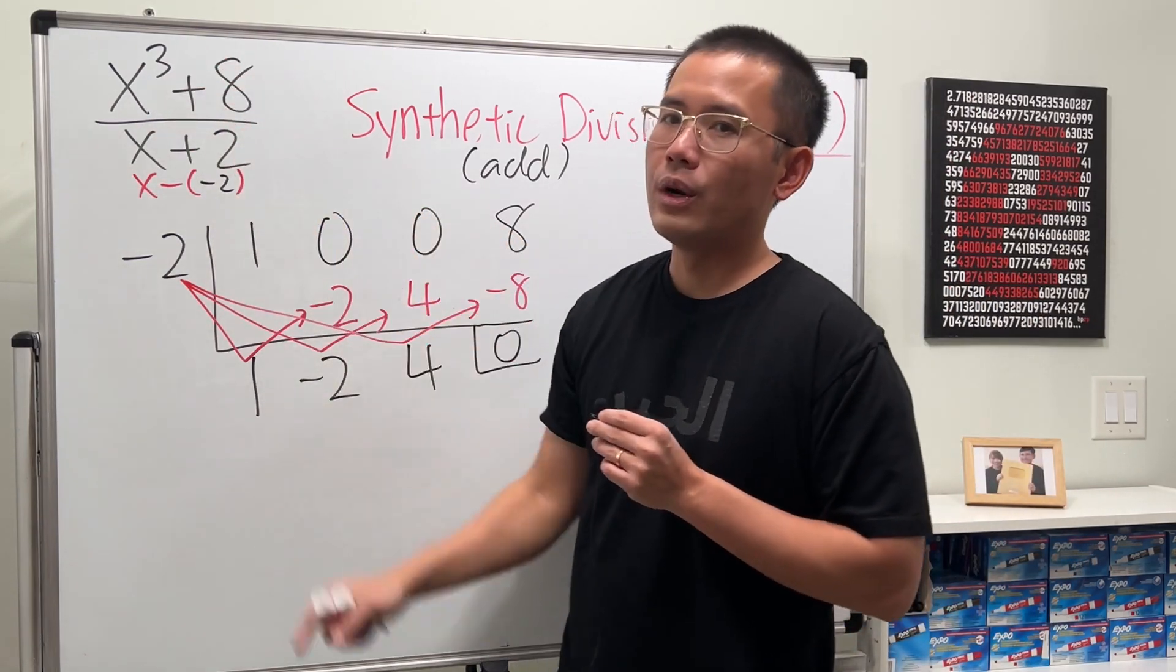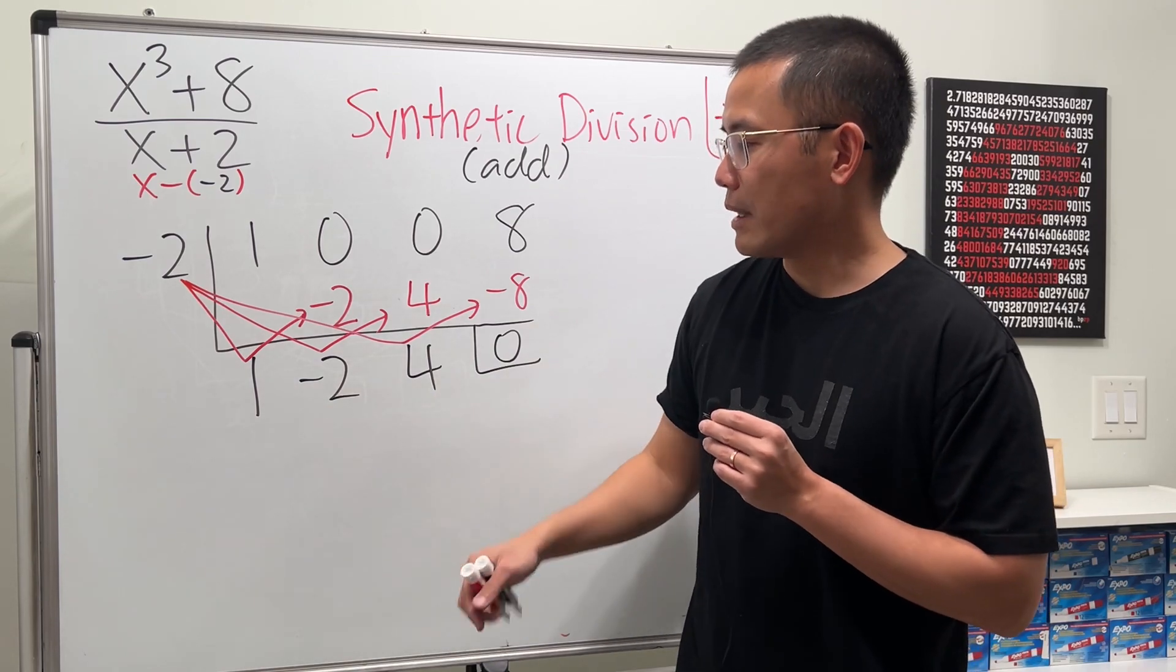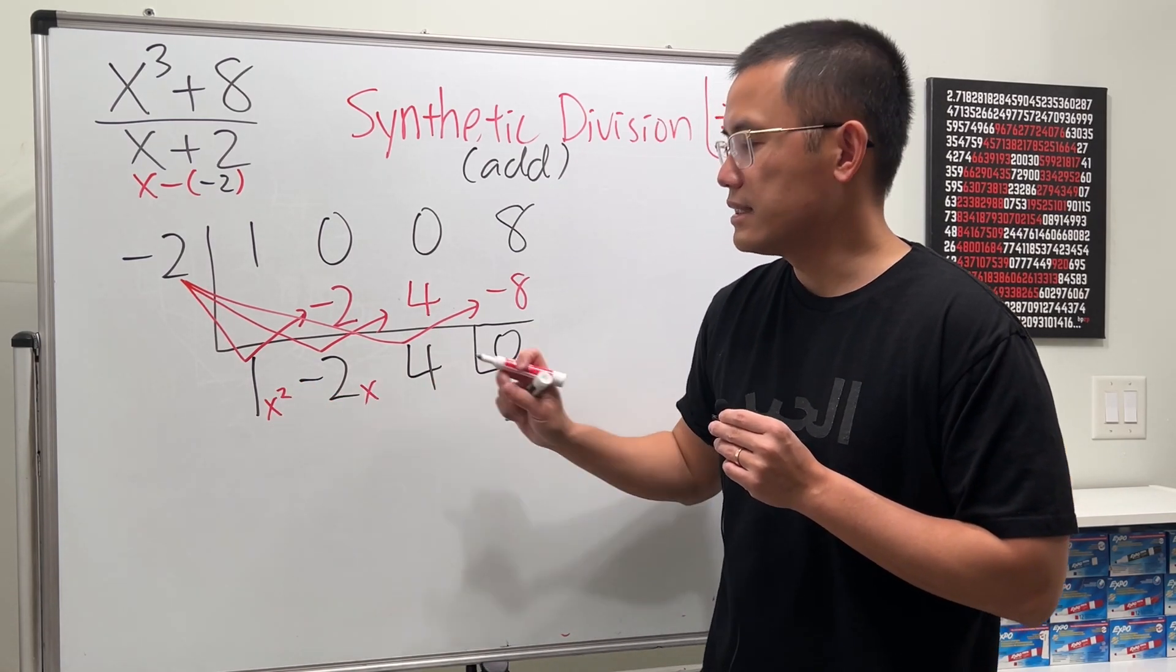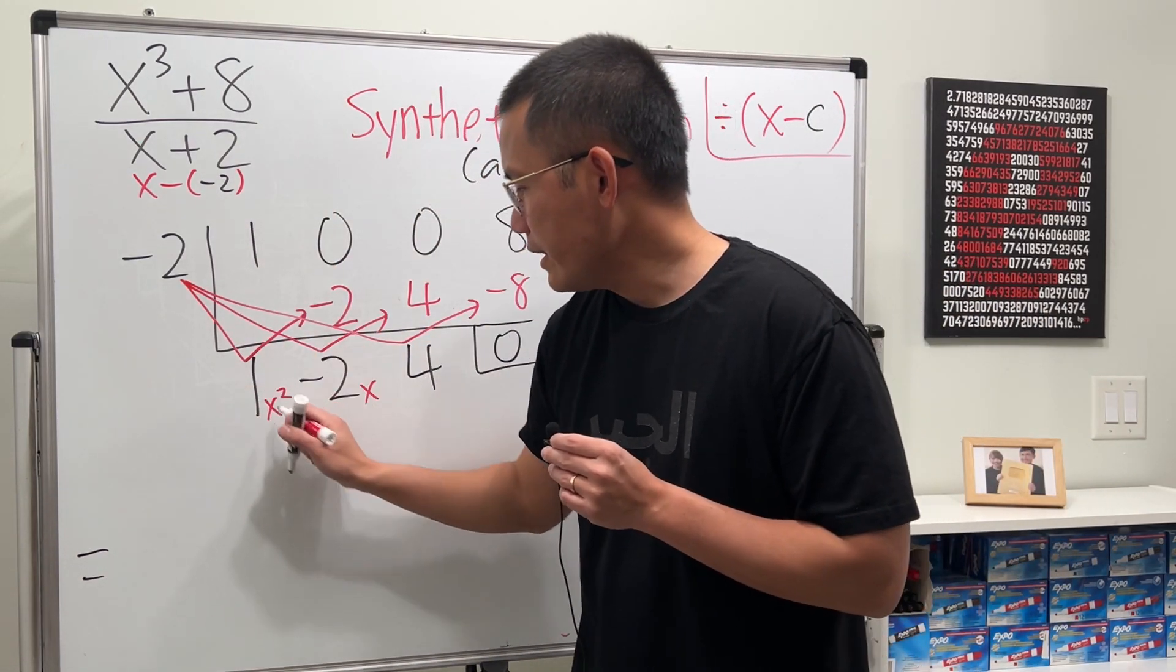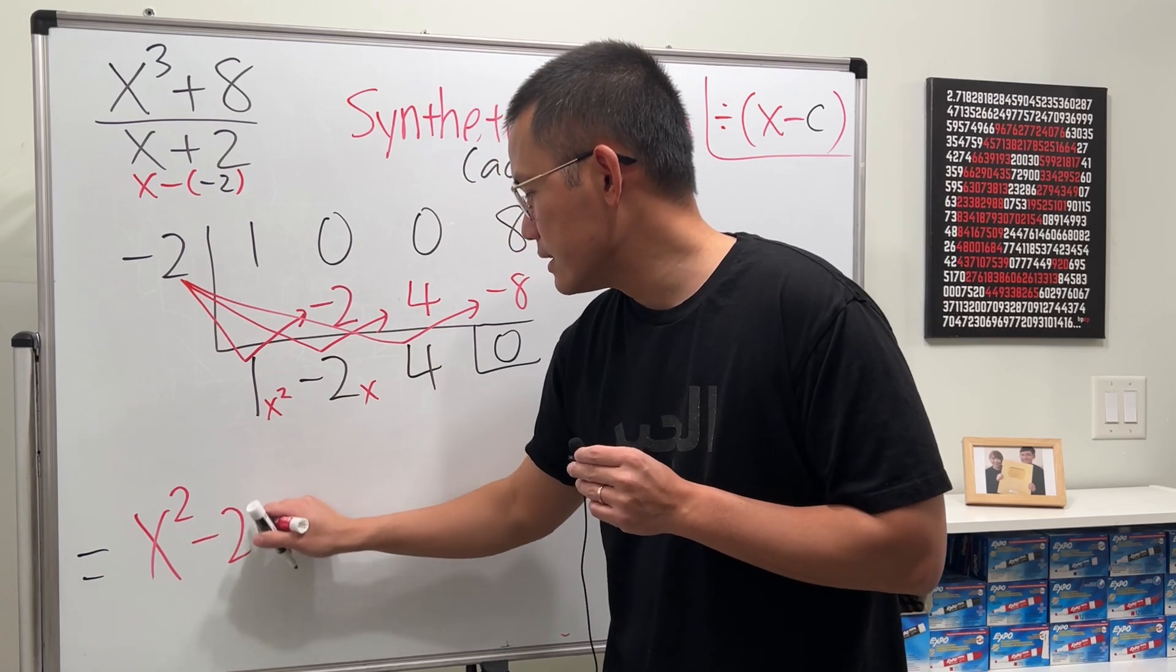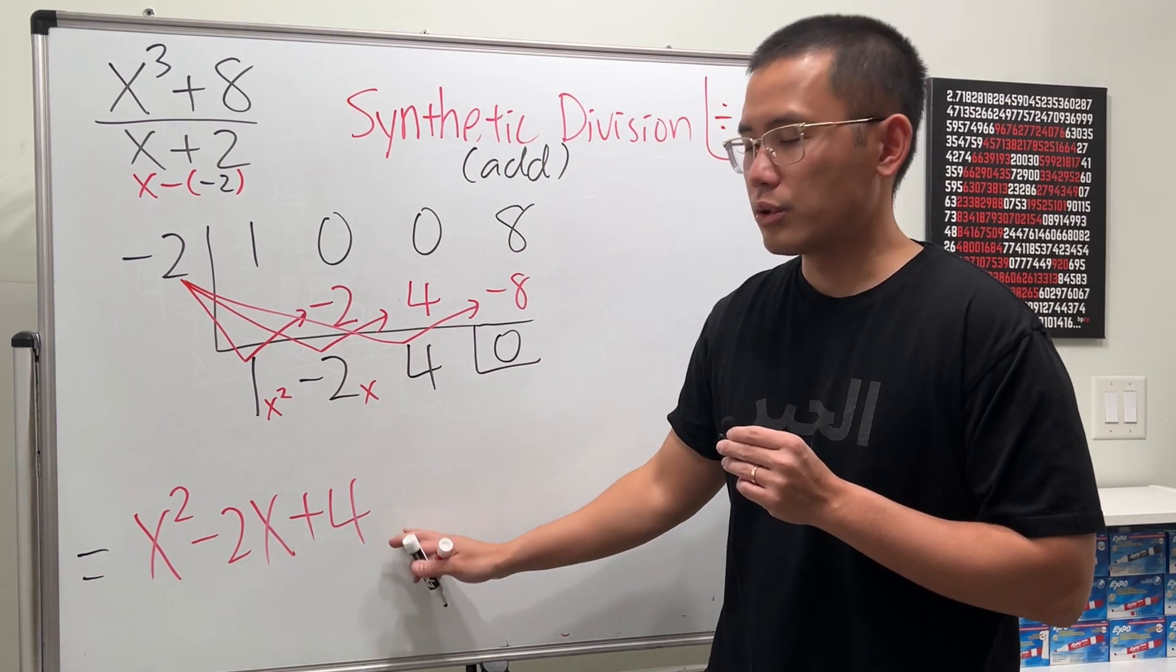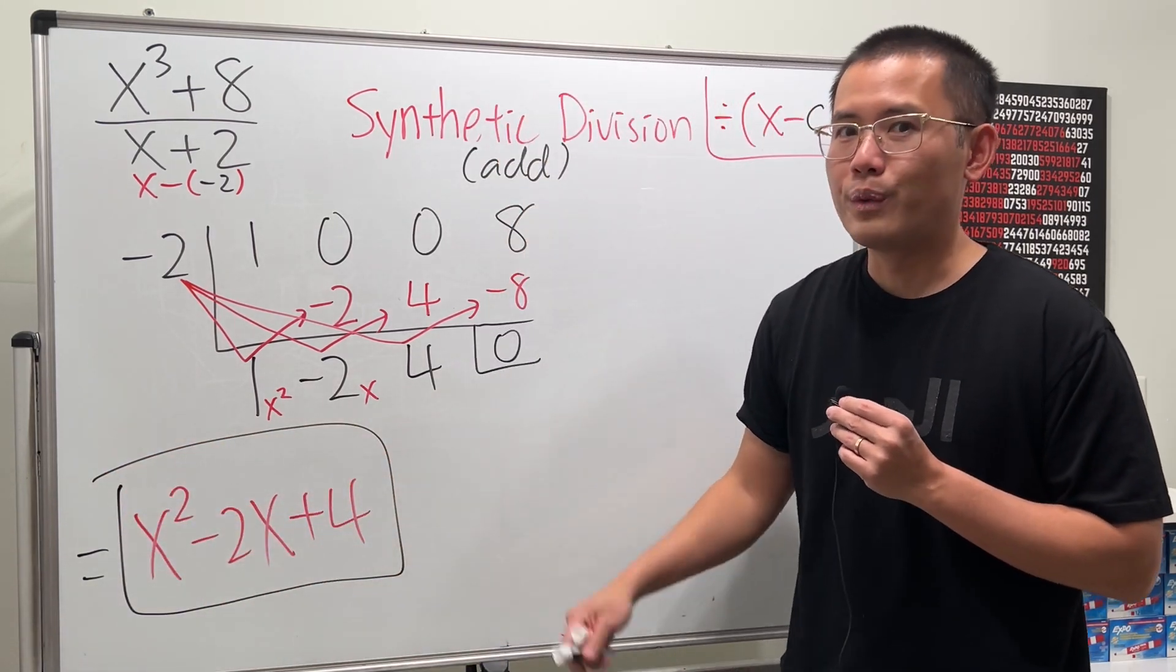Now, we have x to the third power at first. Divided by x to the first. So the power goes down by 1. So this is x to the second power. This is with x. And this has no x. So the answer for this right here is just 1x squared minus 2x plus 4. And the remainder is 0, so you don't have to write down anything else. That's it. Just like what we got last time.